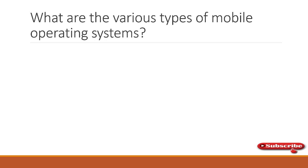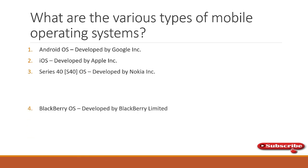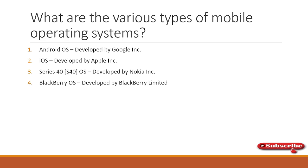What are the various types of mobile operating systems? This is also an entry-level question. For Android devices you have Android OS, powered by Google. For Apple devices you have iOS. There is also the Series 40 OS from Nokia and BlackBerry OS from BlackBerry Limited.